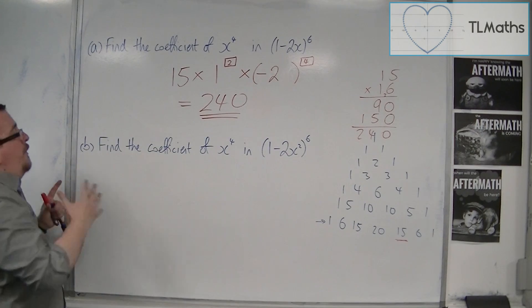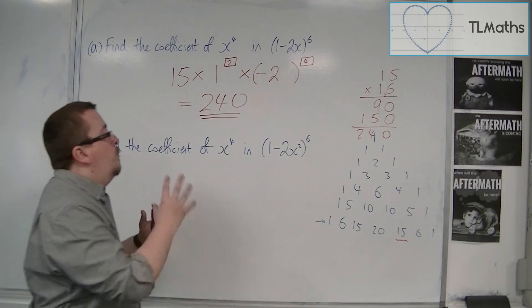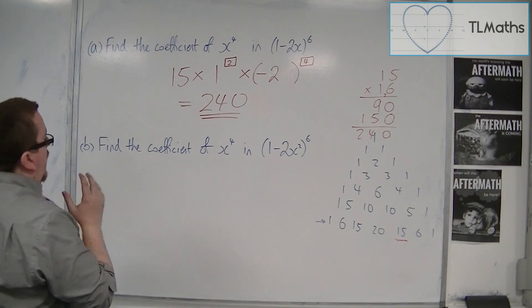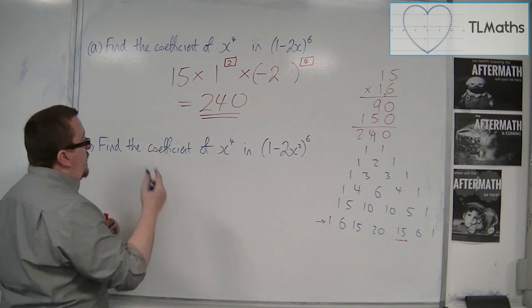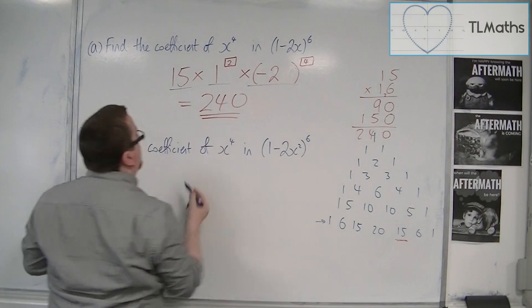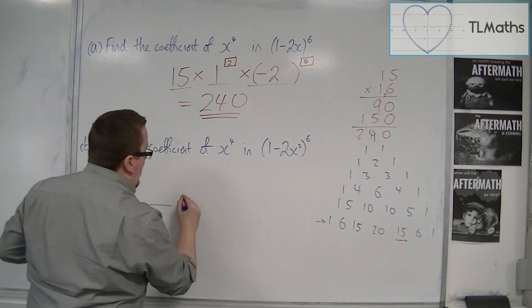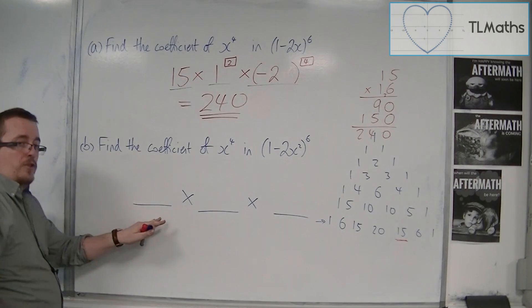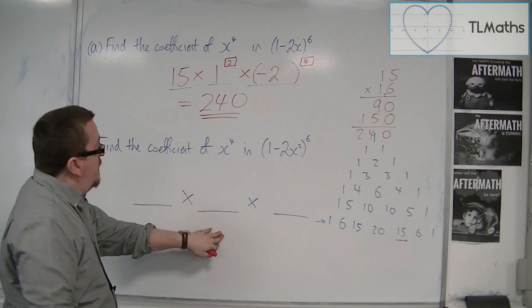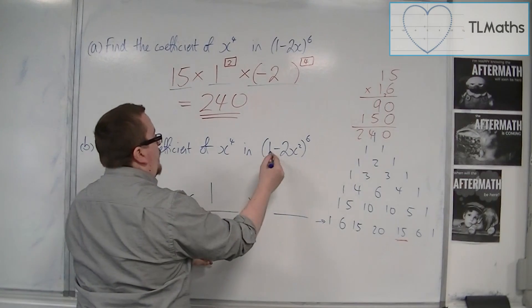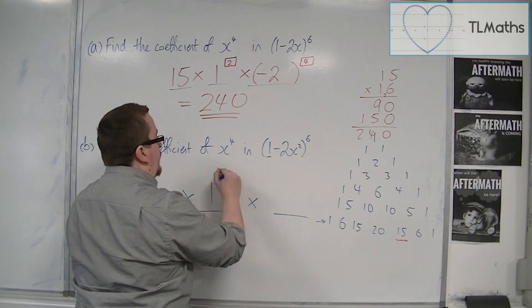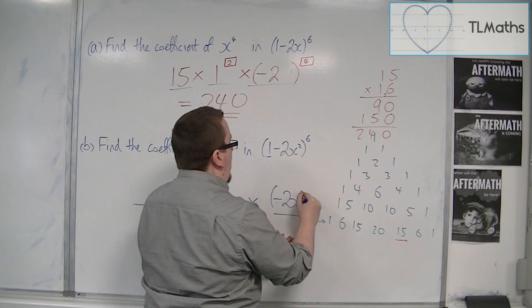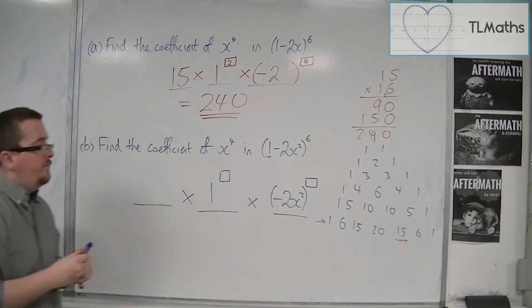So how about this bit? Find the coefficient of x to the 4 in (1 minus 2x squared) to the 6. Right, well I know that there's going to be these three elements, because I had the three elements there for the first time. So there are these three elements that I'm multiplying together. The first one is Pascal's triangle. And then the second one, the middle one, is definitely 1, this first term, to the power of something. And then I've got the second term, the minus 2x squared to the power of something.